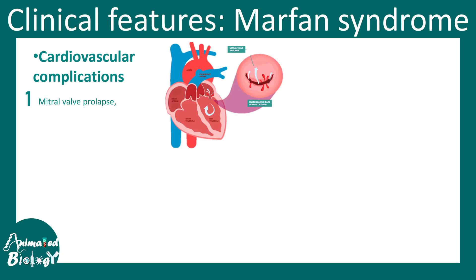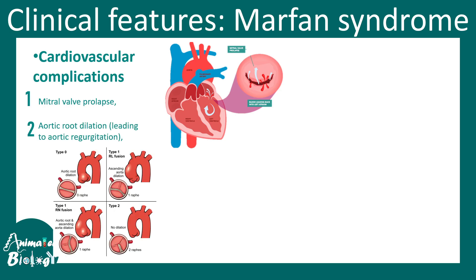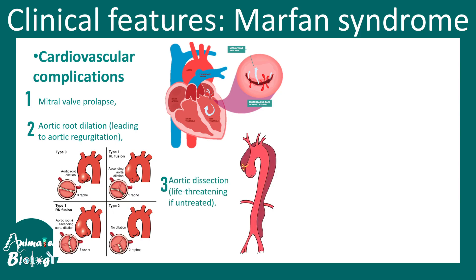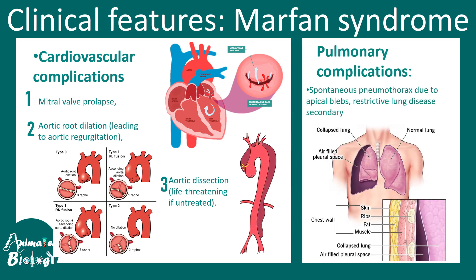Cardiovascular complications are plenty: there could be mitral valve prolapse, aortic root dilation leading to regurgitation in the aorta, and different stages of aortic dilation are depicted here. There could be aortic dissection, which could be life-threatening if untreated. Pulmonary complications are also present — there could be spontaneous pneumothorax, meaning collapsing of the lungs, because the connective tissues are affected.